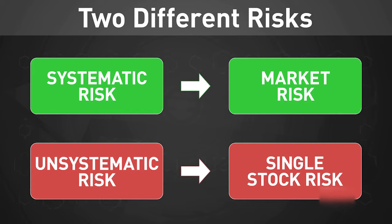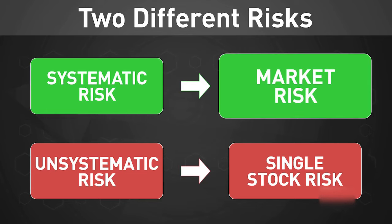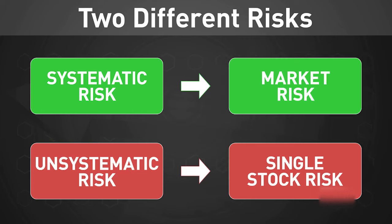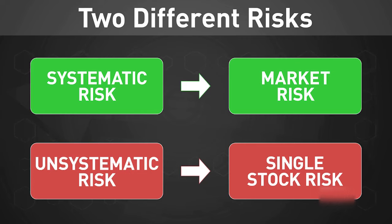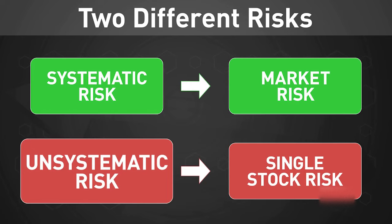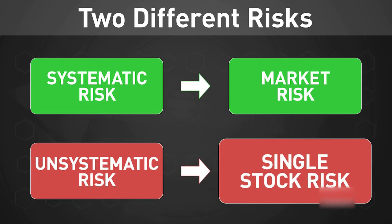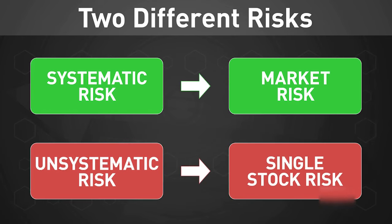Systematic risk, or market risk, is the risk that is inherent in simply having some capital at stake in the financial markets. It is unavoidable and in many ways it's simply a cost of doing business.